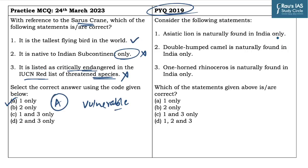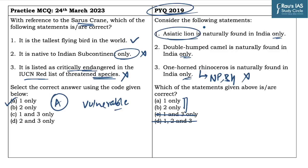In all three statements, the word 'only' is mentioned everywhere, so it becomes difficult to eliminate options just by removing statements which include the word 'only.' Now, the third statement of the previous year question says one-horned rhino is naturally found in India only. If you are following the newspapers regularly, you must be aware that rhino is found in Nepal and Bhutan also, so this statement is incorrect. If we eliminate the third option, we are left with only two options. Many of you must be aware that the Asiatic lion is found only in Gujarat, specifically in the Gir Forest area, so that statement is correct. The answer becomes A, which is one only. Whenever you come across such questions, try to apply your common sense to reach the correct answer.